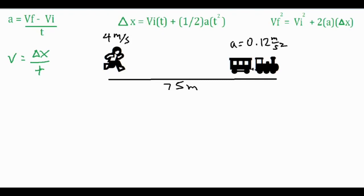The one realization that you're going to have to have is that once this train reaches 4 meters per second, that's when the kid is not going to catch the train anymore.